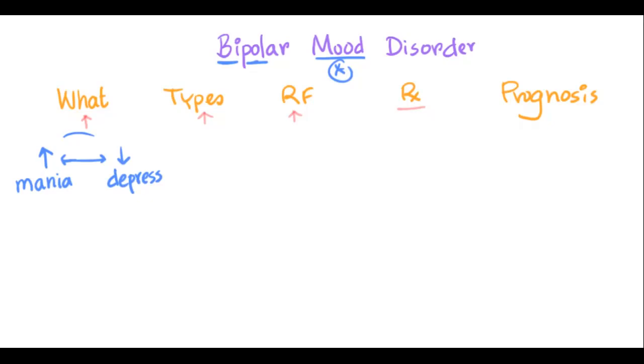There are two classic types of bipolar mood disorder. One is type 1 and you have type 2 bipolar mood disorder. In type 1 bipolar mood disorder, you have a combination of both mania and depression.